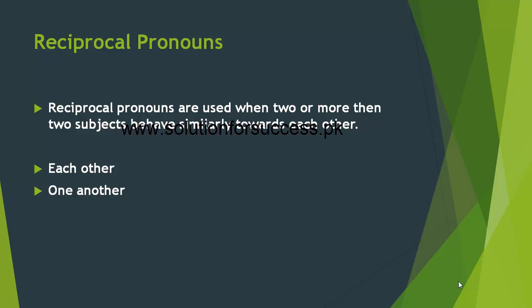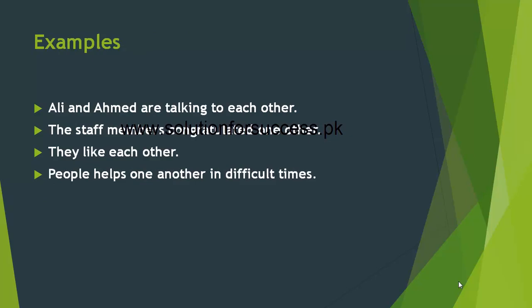Reciprocal pronouns are used when two or more than two subjects behave similarly towards each other. Reciprocal pronouns اس وقت استعمال کیے جاتے ہیں جب دو یا دو سے زیادہ subject ایک دوسرے کی طرف similar fashion میں behave کریں۔ Reciprocal pronouns میں each other and one another آتے ہیں۔ مثال: Ali and Ahmed are talking to each other. The staff members congratulated one another. They like each other.